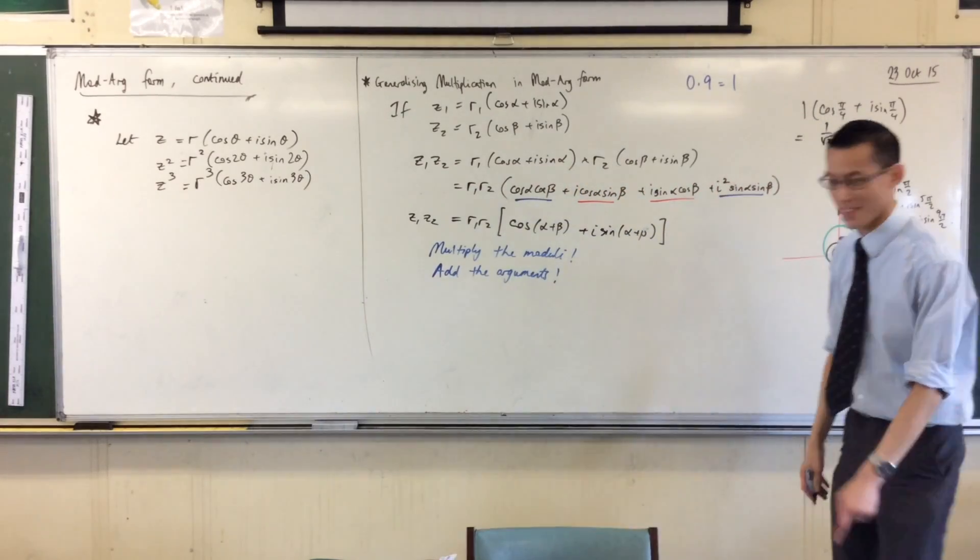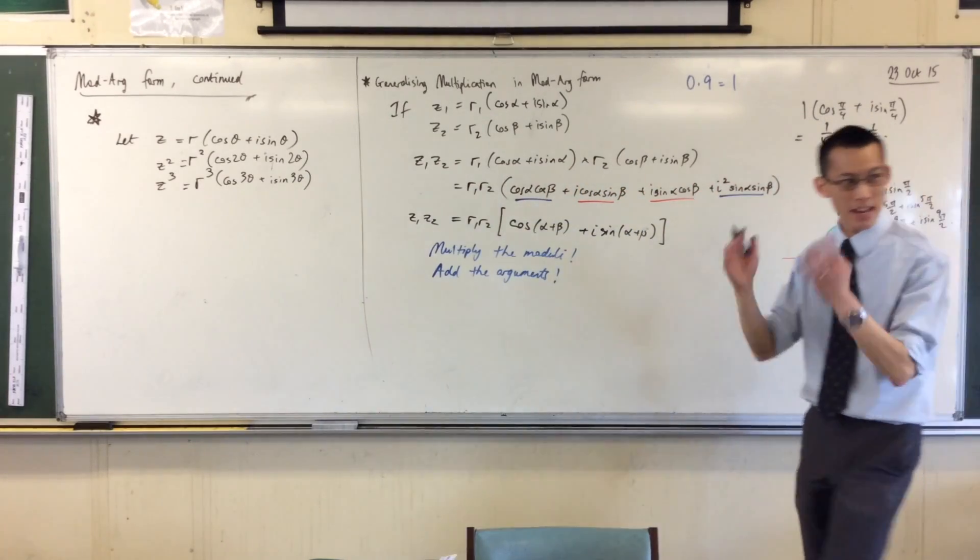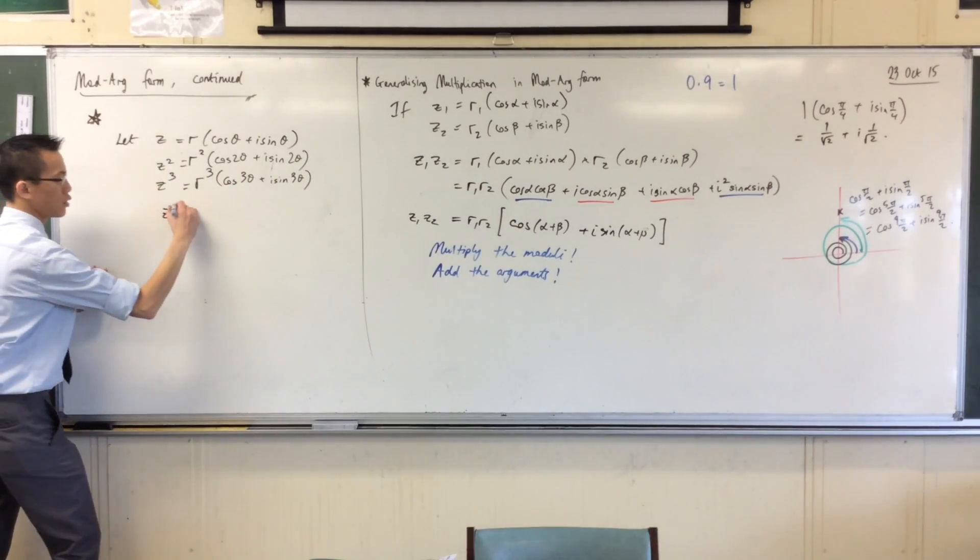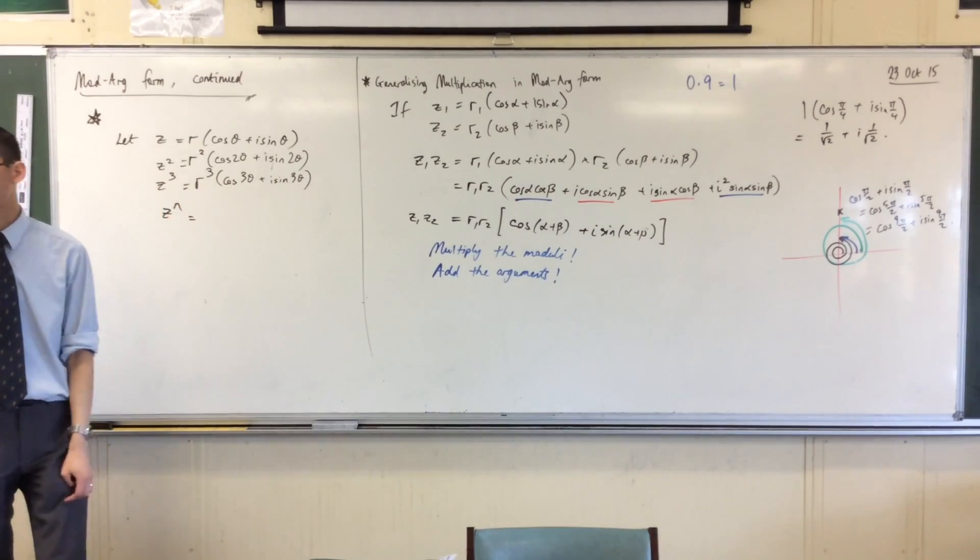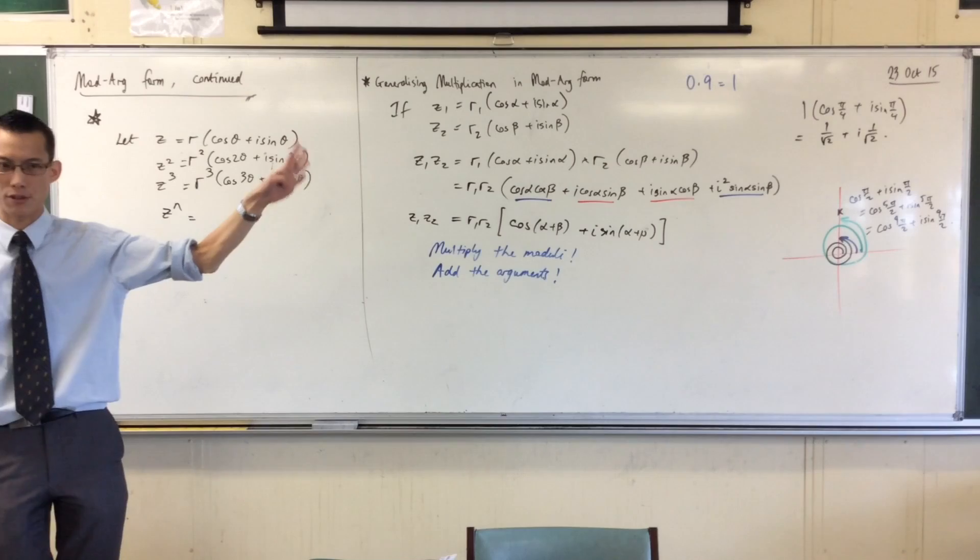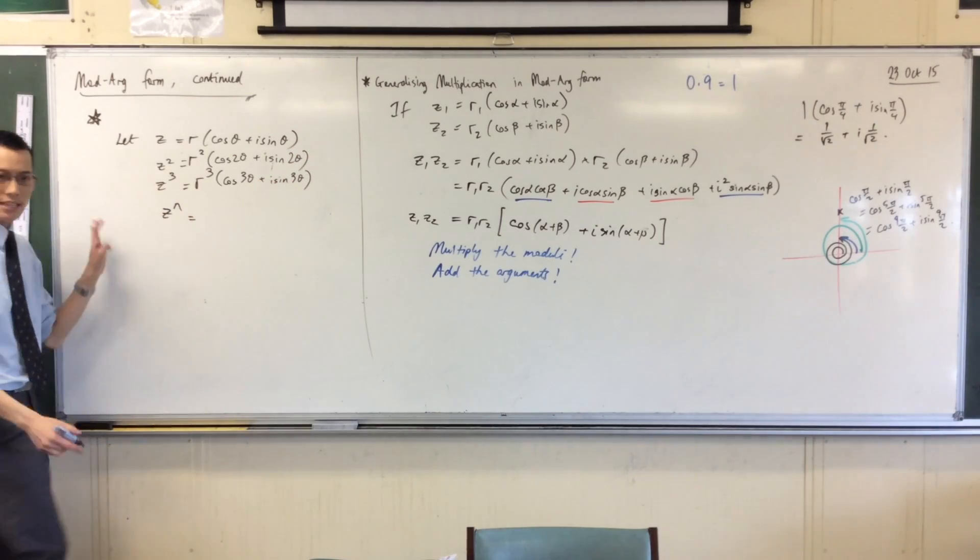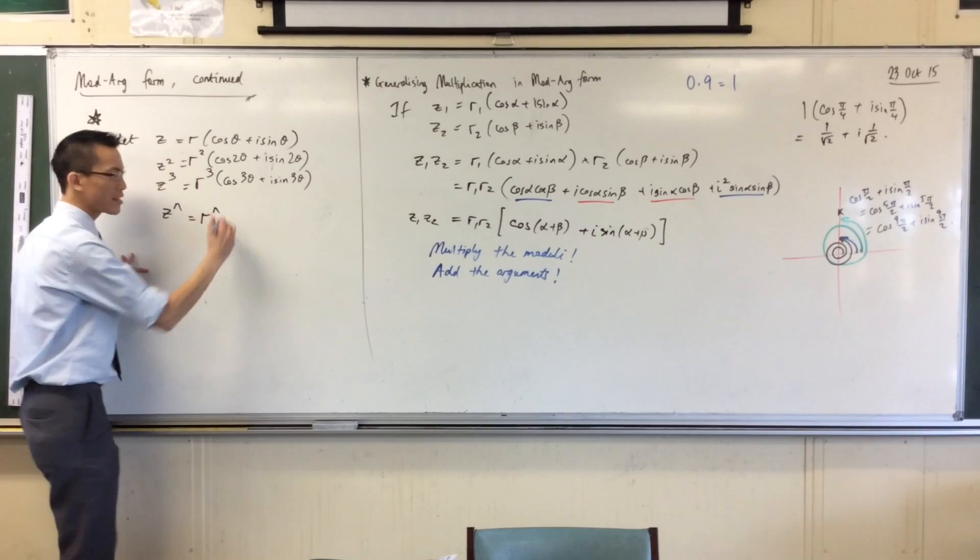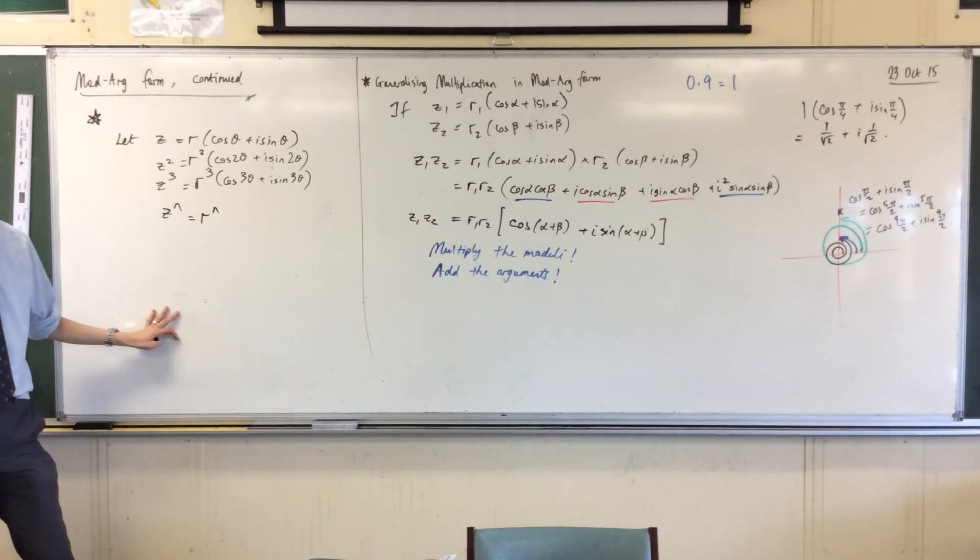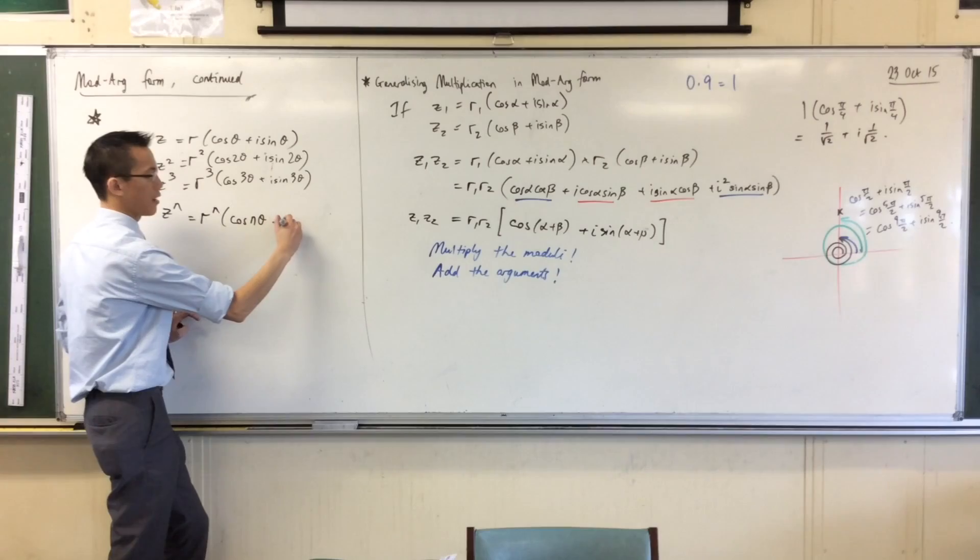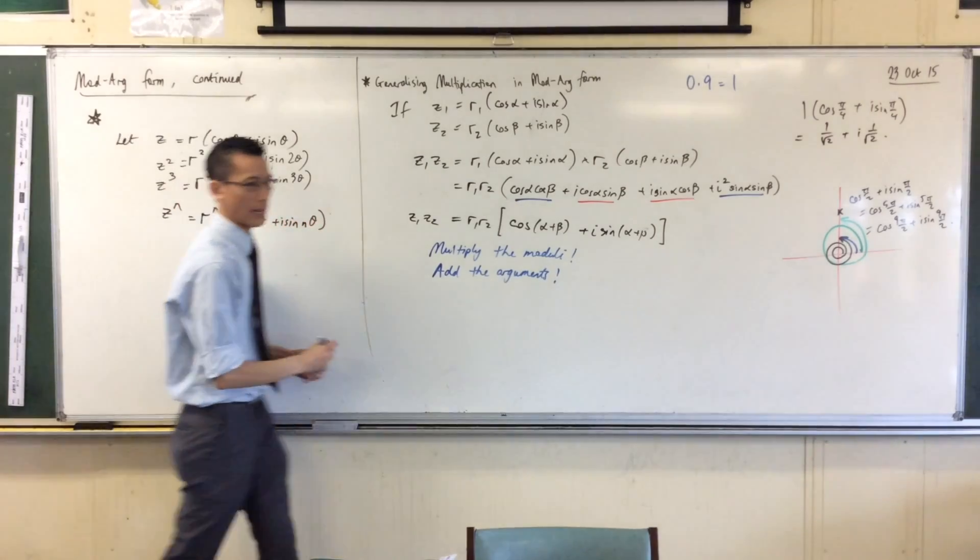Now it doesn't take a rocket scientist to generalize from here. If you take any complex number and you raise it to some integer power, I'm going to write down my restriction in a second, then all I need to do is raise the modulus to that same integer power and multiply my angle by whatever power it was.